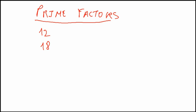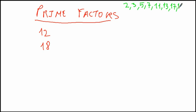The first thing is to know which are the prime numbers. Prime numbers are 2, 3, 5, 7 — not 9 — 11, 13, 17, 19, etc.